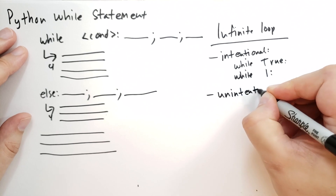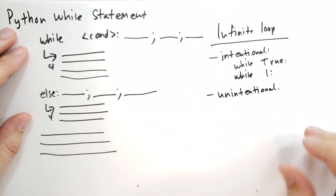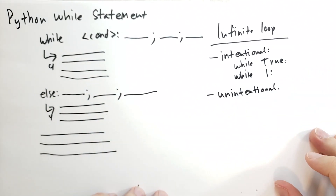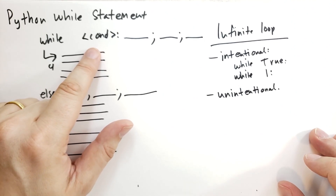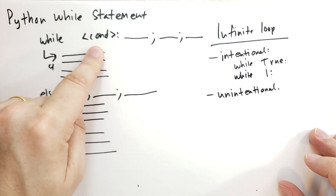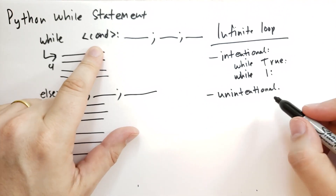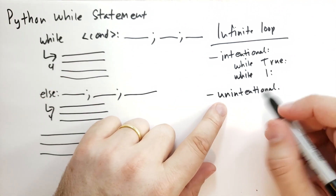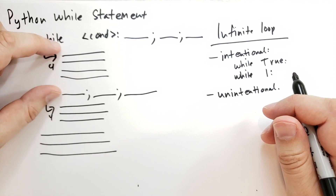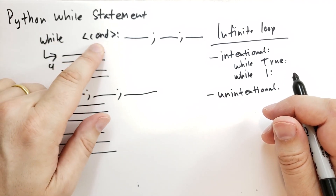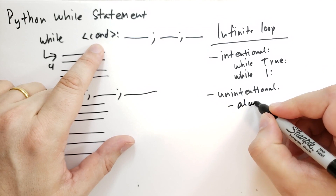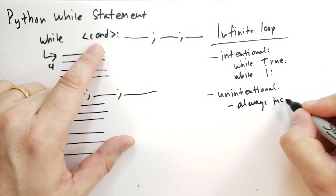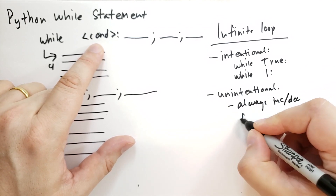The unintentional infinite loops arise due to a programming error. Typically in this condition, you have some sort of counter that's counting down or up, or you have some sort of condition that is eventually supposed to resolve to false. The reason why you have an unintentional infinite loop is you're forgetting to adjust the variables that are used as input to that condition.